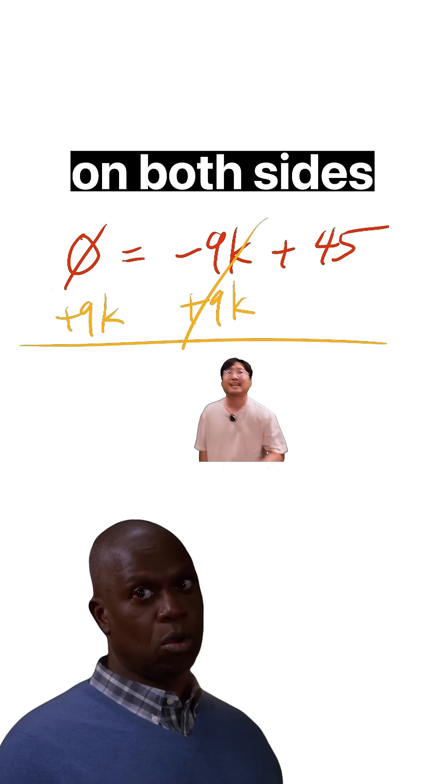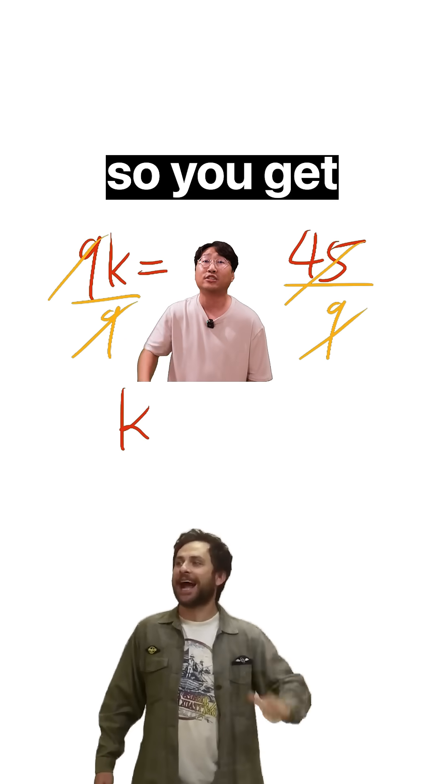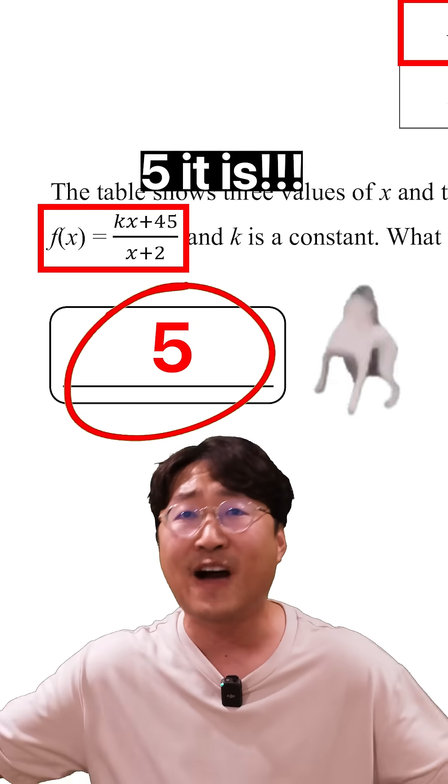Go ahead and add 9k on both sides, so you get 9k is equal to 45. Go ahead and divide by 9 on both sides, so you get k is equal to 5. So answer's going to be 5.